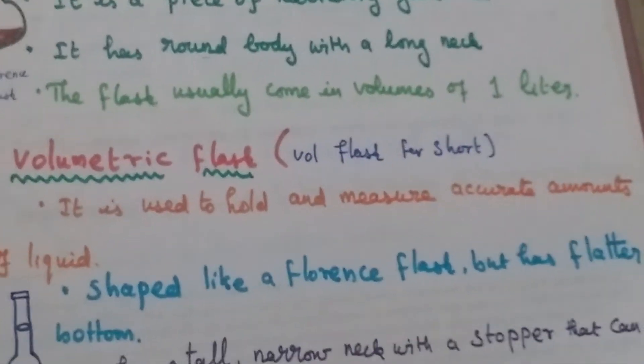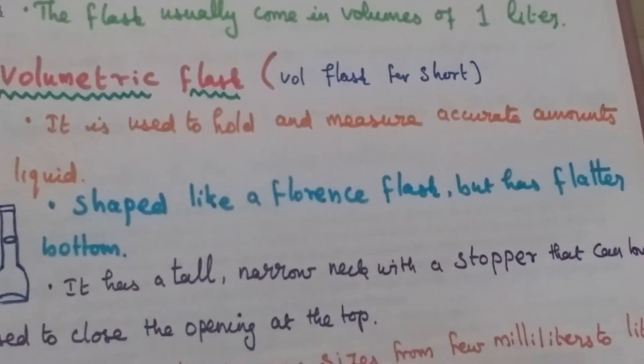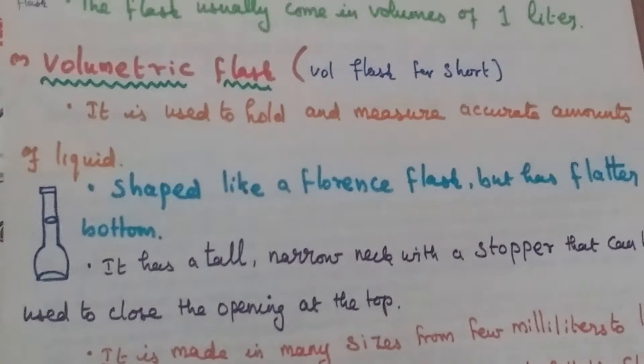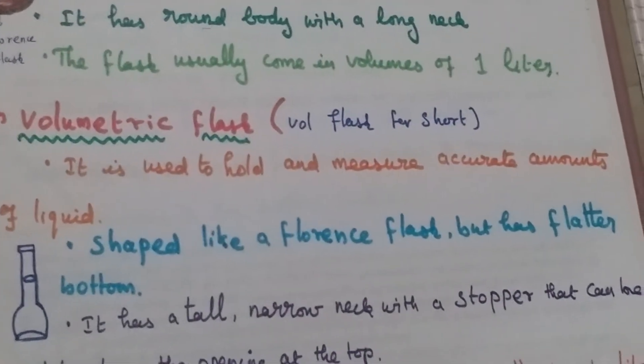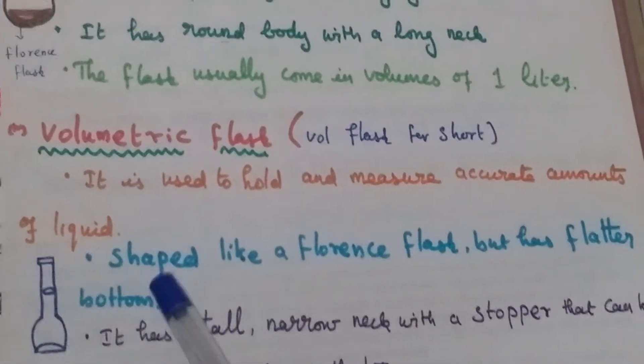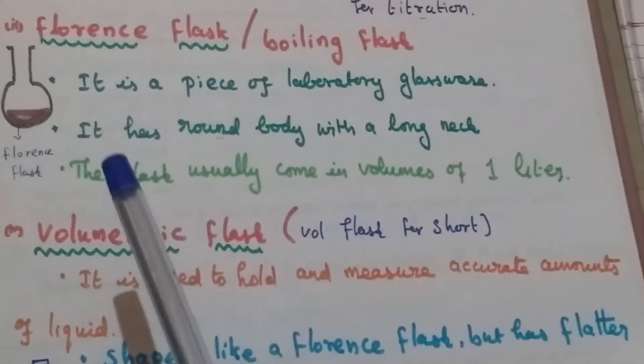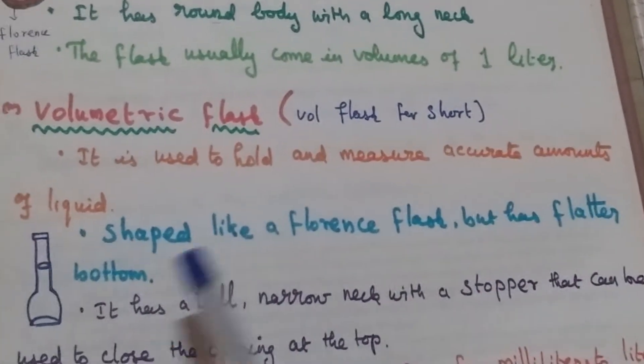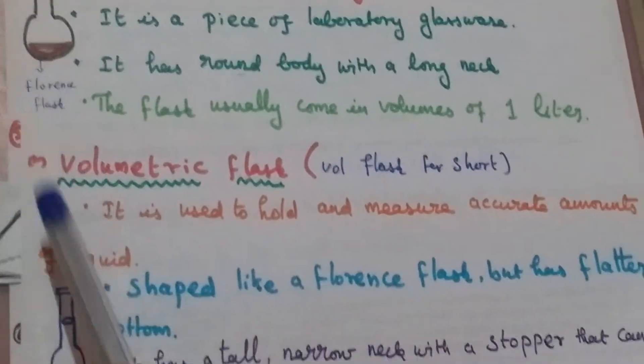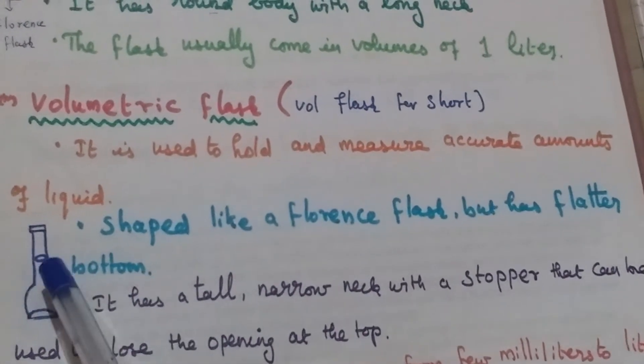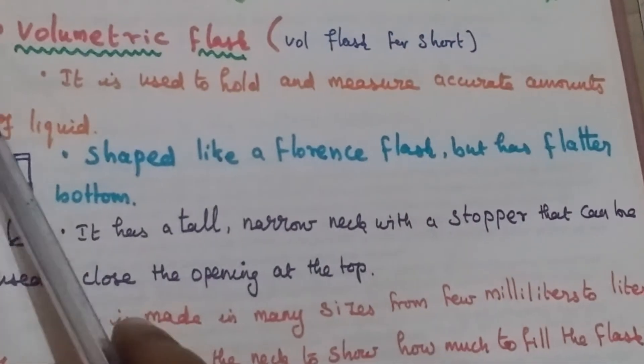Third is the volumetric flask. It is used to hold and measure accurate amounts of liquid. Its shape looks like a Florence flask, but has a flatter bottom. It has a tall, narrow neck with a stopper that can close the opening at the top.